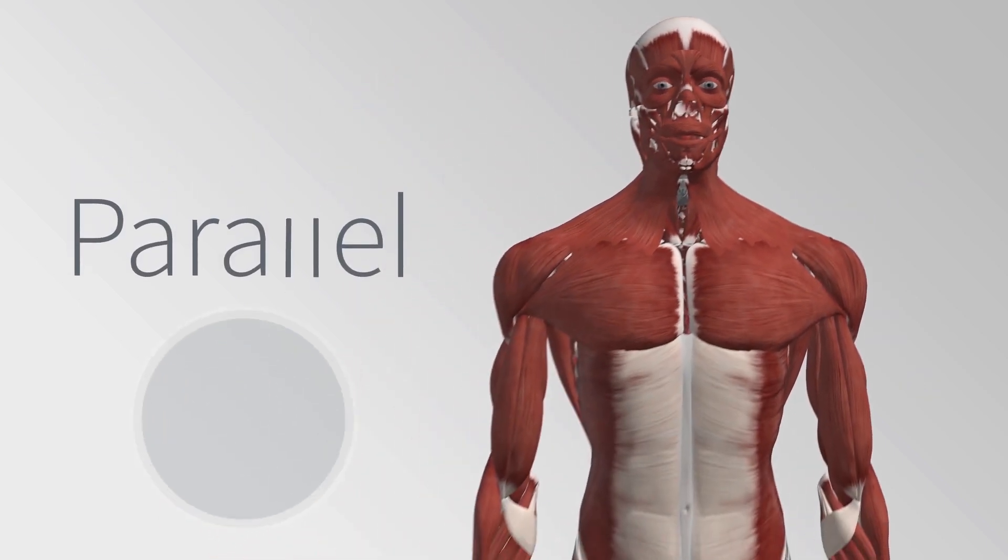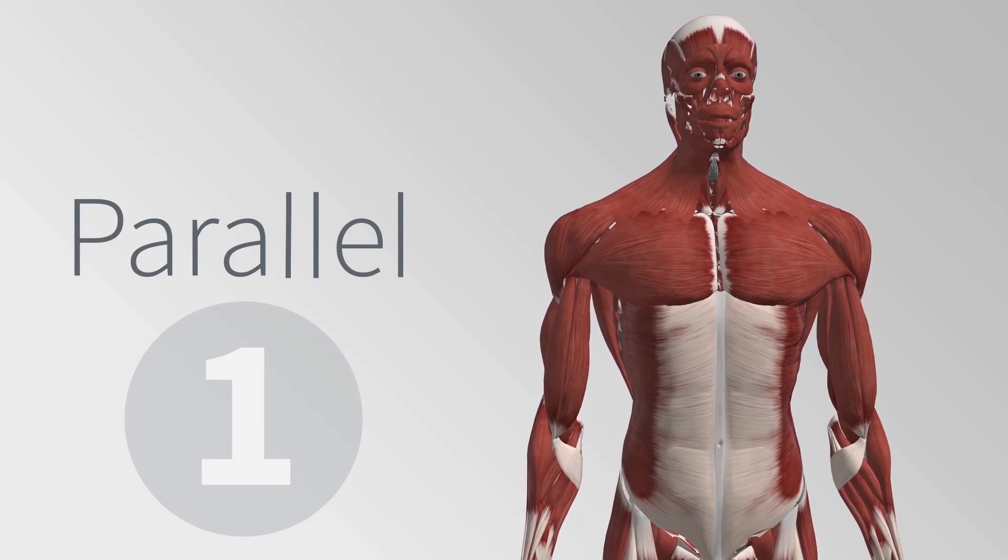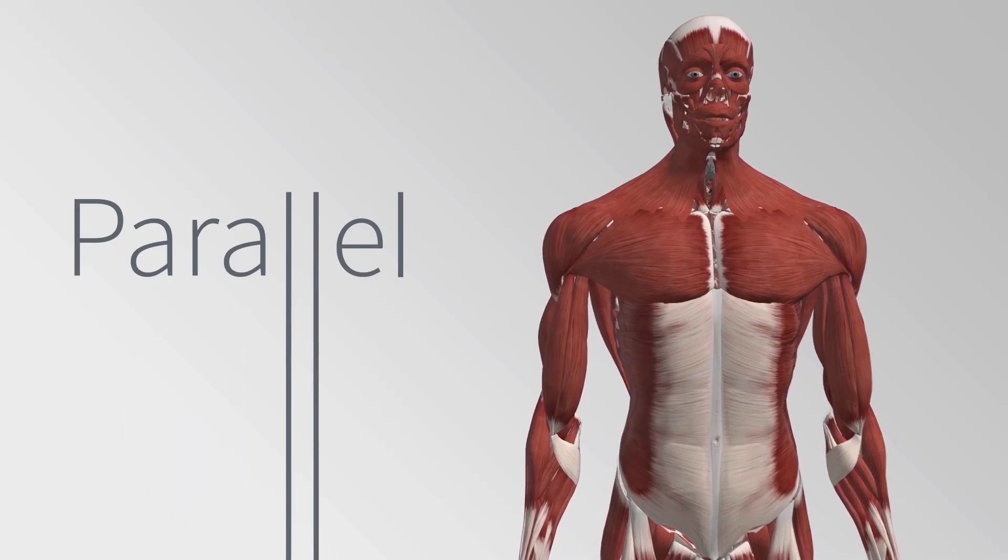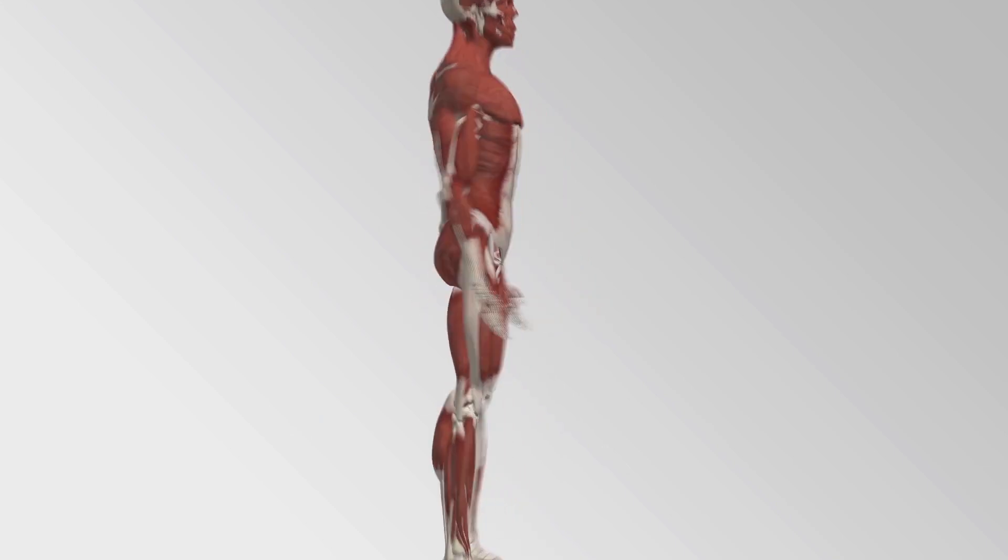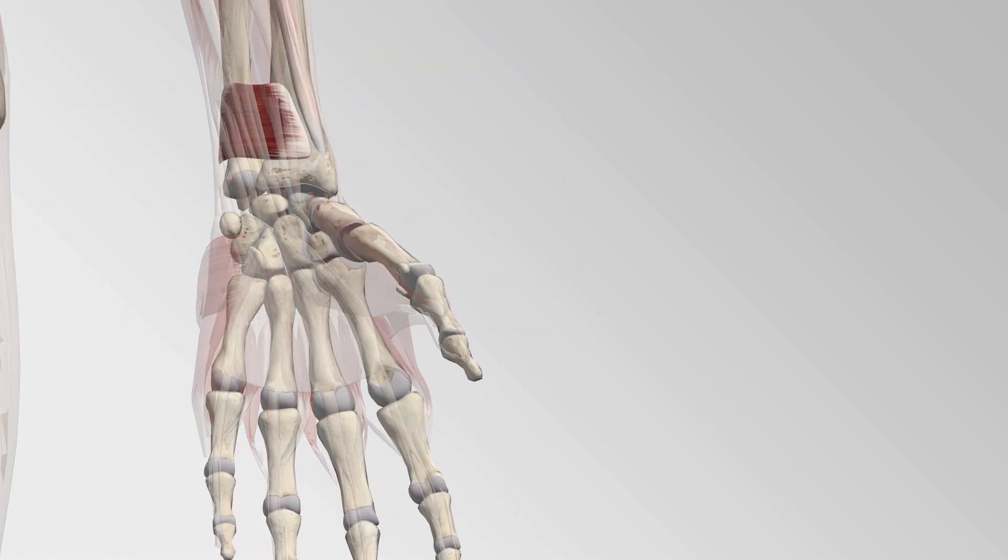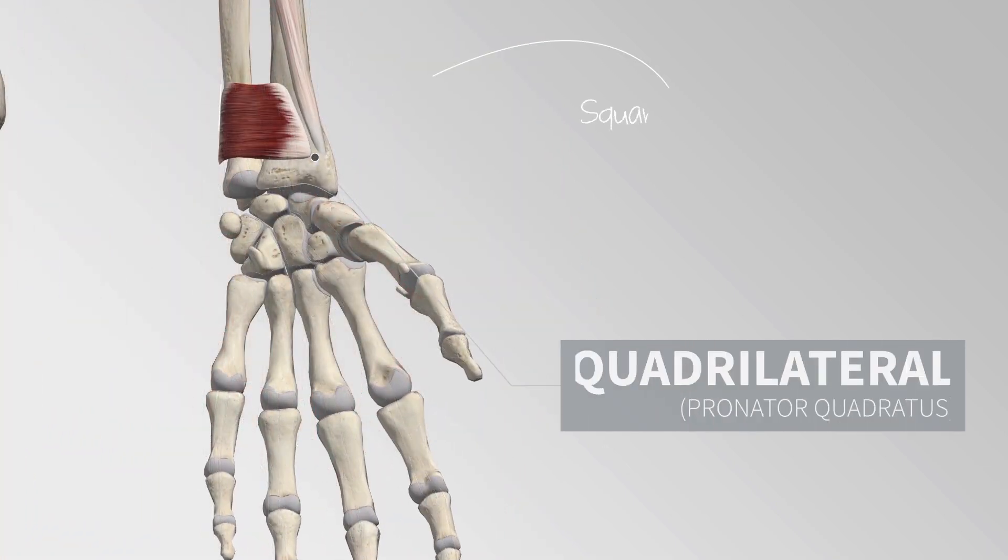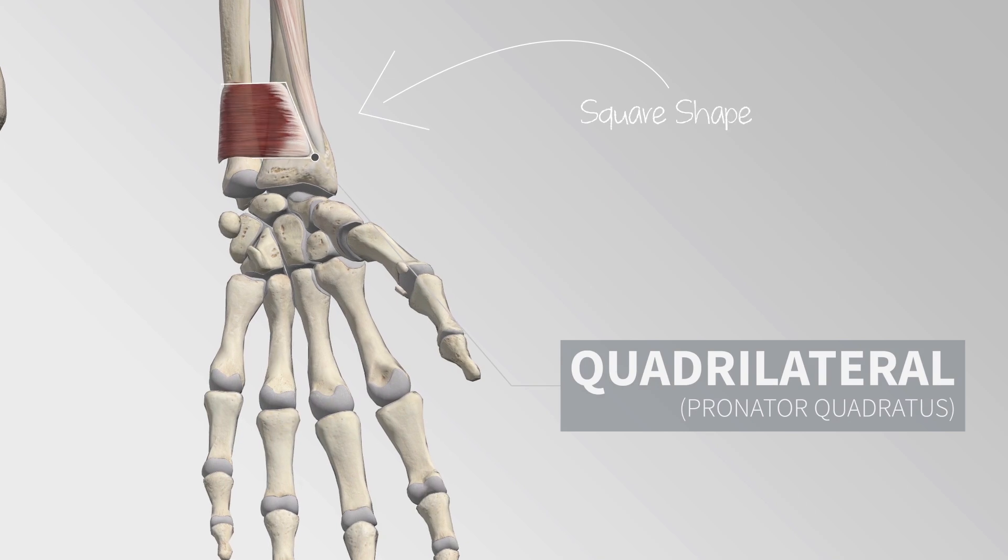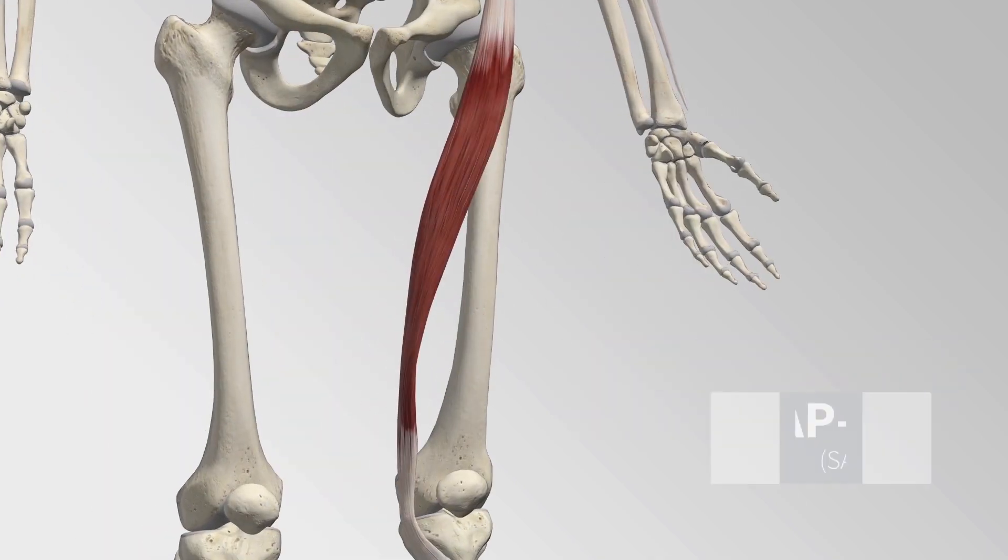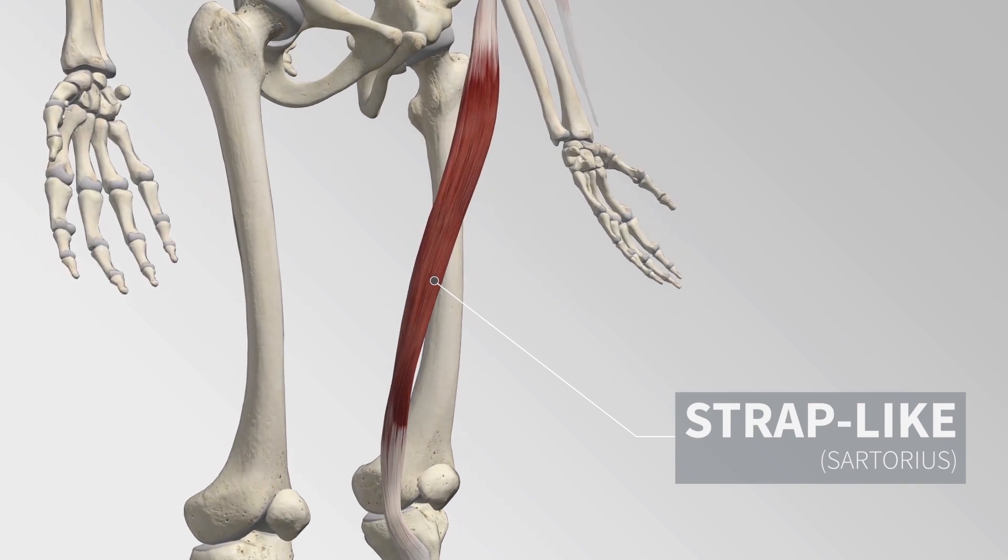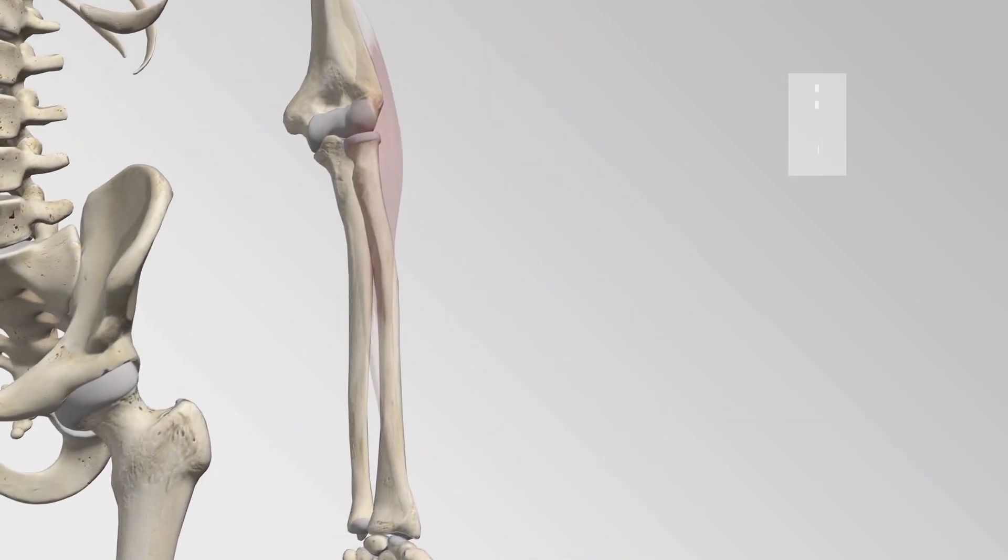Parallel skeletal muscles consist of fibers that are arranged in parallel to the line of pull during contraction. Parallel muscles can be subcategorized based on their shape into quadrilateral, strap-like, and fusiform.